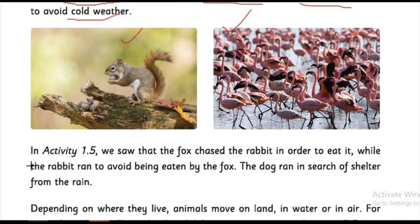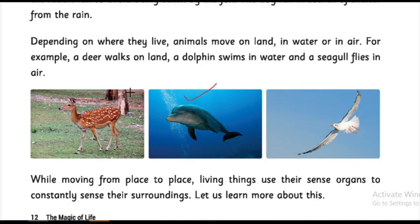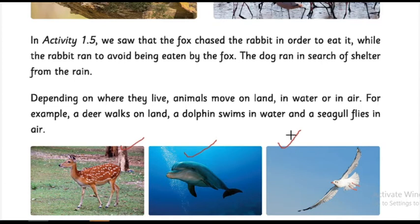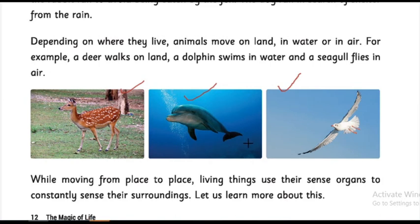There are some examples given: squirrel, flamingo, and deer. A shark moves inside the water in search of food. Birds fly from one country to another to escape cold weather and to reproduce. Many Australian birds come to Tamil Nadu, to Korakarai, in season to reproduce, and then leave with their young ones. So respiration and movement are very important for living beings. We have learned two characters: respiration, with the important organ being the lungs, and movement.